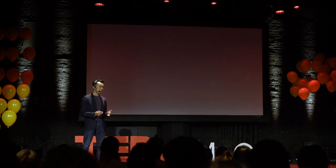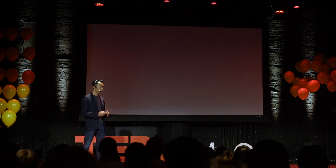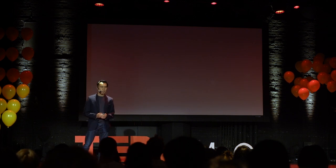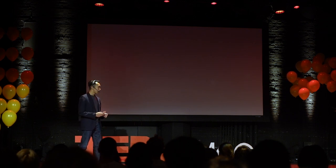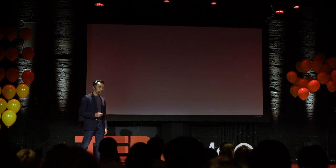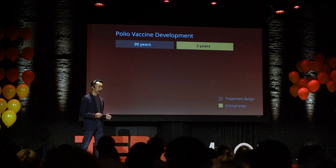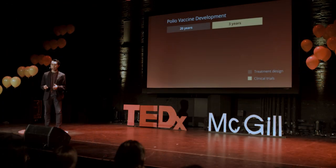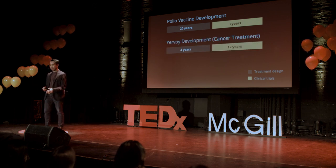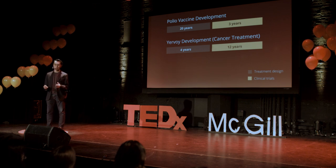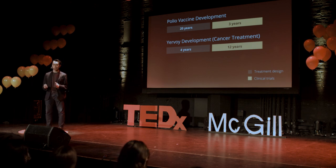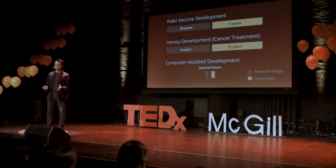These two different treatments — one for an external disease and the other for an internal disease — both rely on proteins. And these two are reflective of the thousands of treatments available today to cure a variety of diseases. As promising as this is, these treatments are not without limitations. They're very lengthy and very costly to develop. It took 23 years to develop the first polio vaccine, from research and development to clinical trials and finally mass production. It took 16 years to develop Yervoy, which is a treatment for immunotherapy.